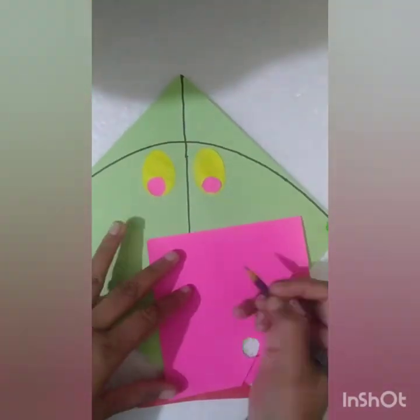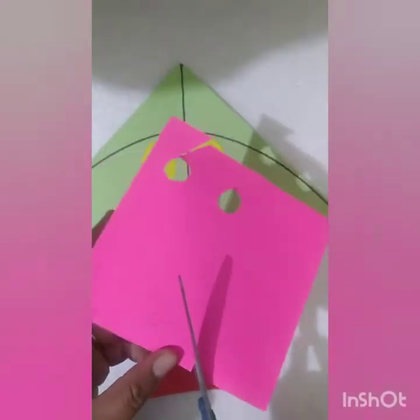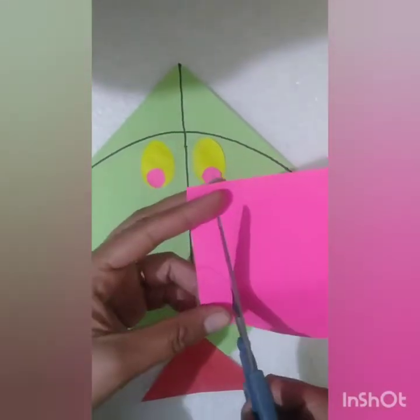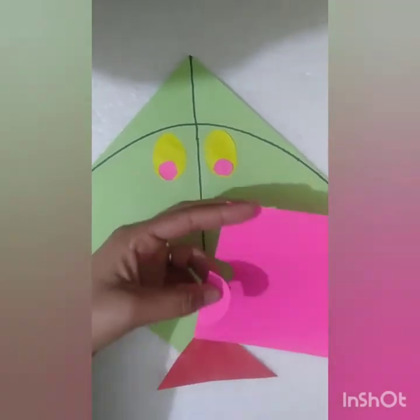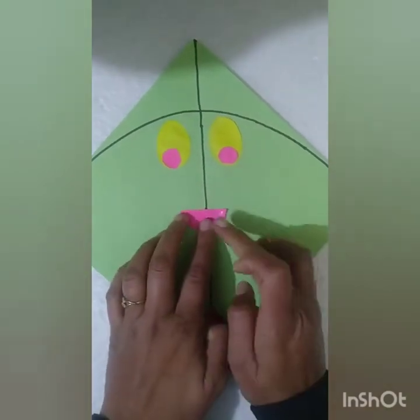Now children, we will make a semi-circle shape like this. Now we will paste the semi-circle shape like this.